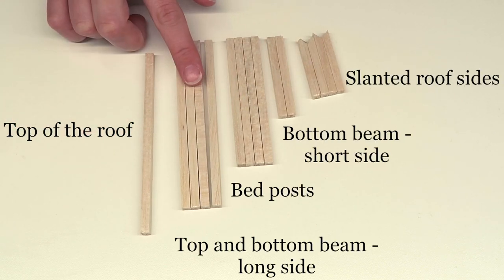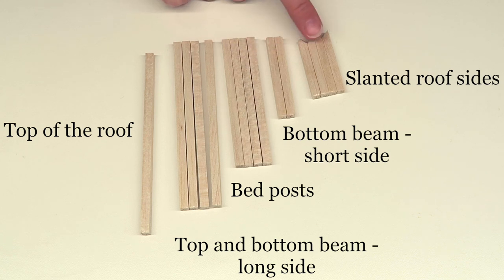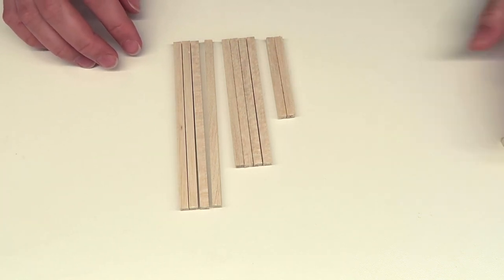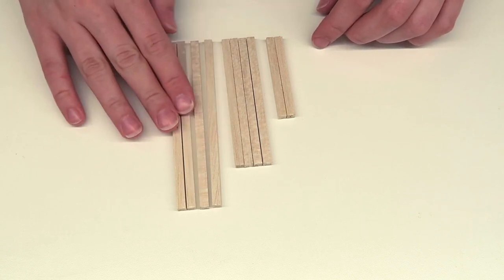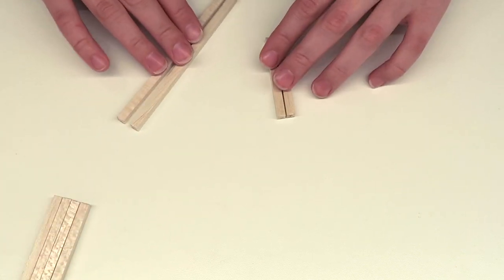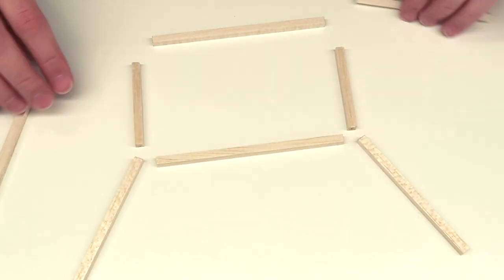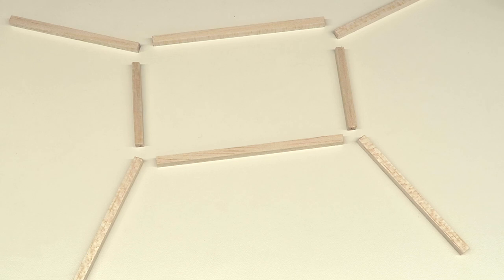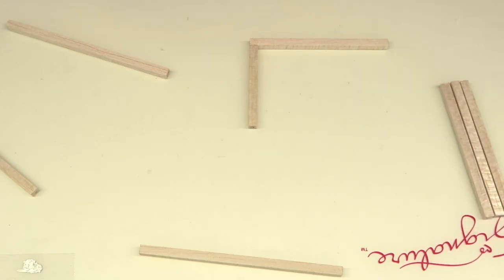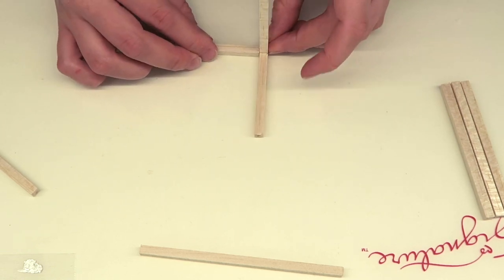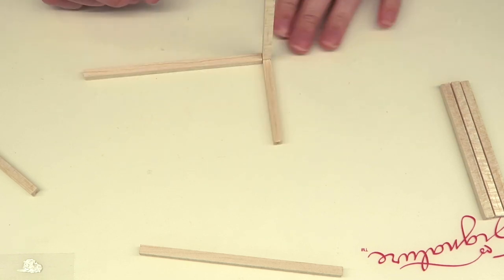Here I'm showing you the basic structure of the bottom, so the long pieces, the short pieces, and then the posts. Make sure to glue everything to the post so that the posts go on the outside, and that is how it's gonna have that seamless look in the end.